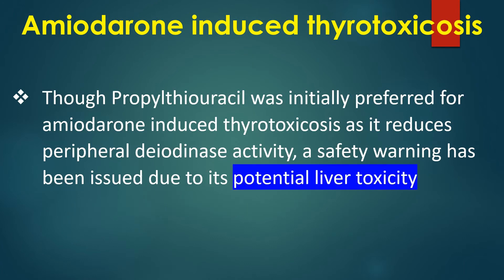Though propylthiouracil was initially preferred for amiodarone-induced thyroid toxicosis as it reduces peripheral deiodinase activity, a safety warning has been issued due to its potential liver toxicity.